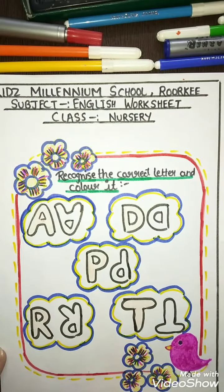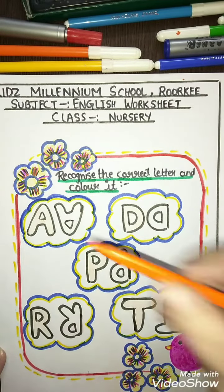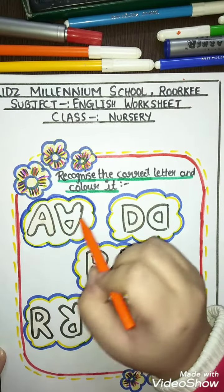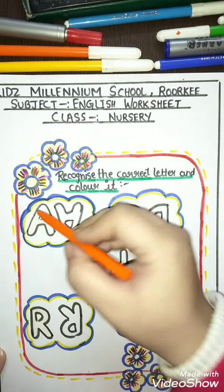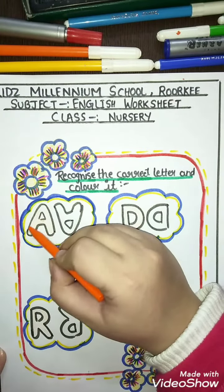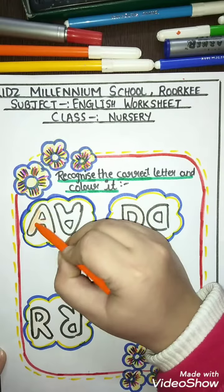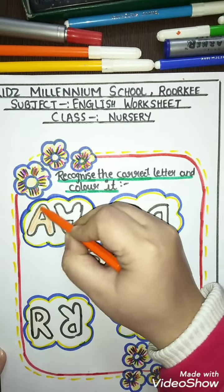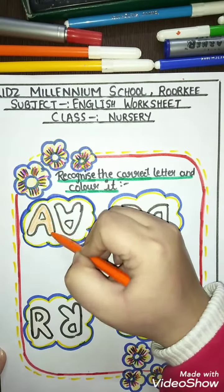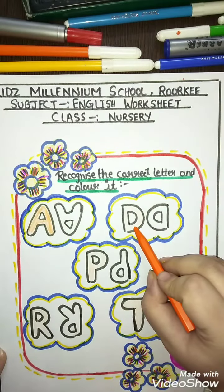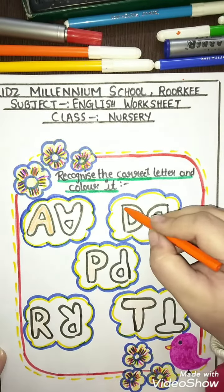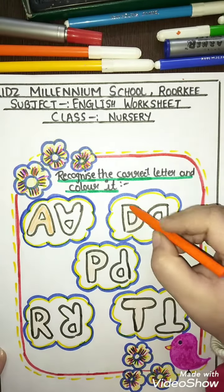Jo correct letter hain us mein aap color karenge. Okay, which alphabet is this? A — A for apple. So you will color the correct A like this. Now which alphabet is this? D — D for dog.